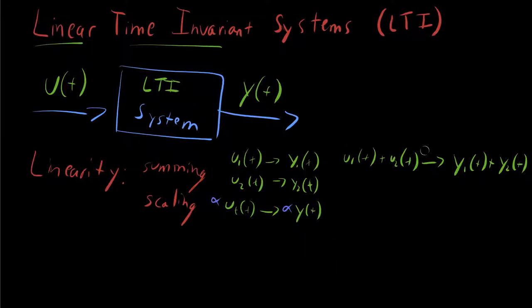You can put all of these together into one final equation and write down the general property of linearity, which is that a scaling of an input plus a scaling of a second input, added together, will output a scaling of the first output plus a scaling of the second output.